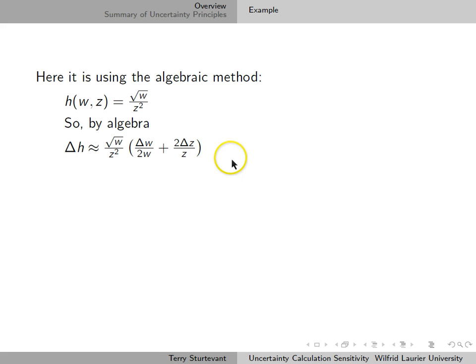By algebra, this is the equation that we get for the uncertainty. Delta h w is where we set delta z to be zero, so this term goes away. And delta h z is where we make delta w be zero, so this term goes away.